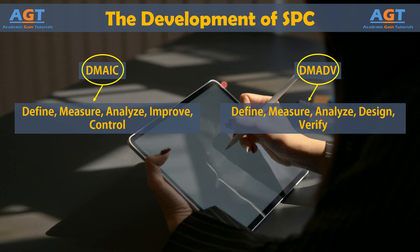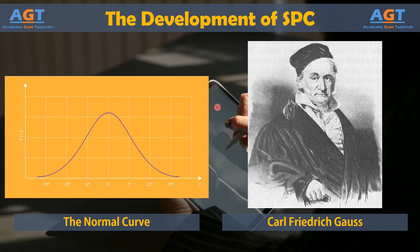The roots of statistical process control, which provide a backbone for Six Sigma methods, began with the development of the normal curve by Karl Friedrich Gauss in the 19th century. We know today that the normal curve is just one of several possible probability distribution models. It is perhaps the most widely used model, and the other models developed from the normal curve. Probability distribution models will be discussed in later videos on statistics.